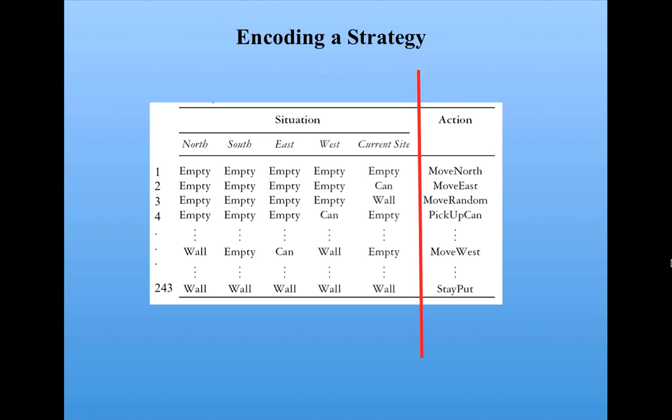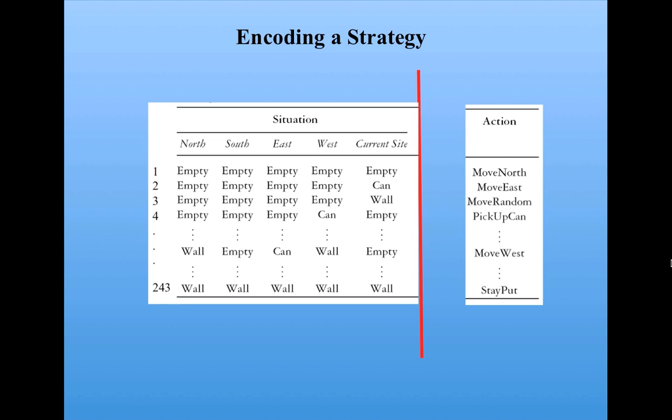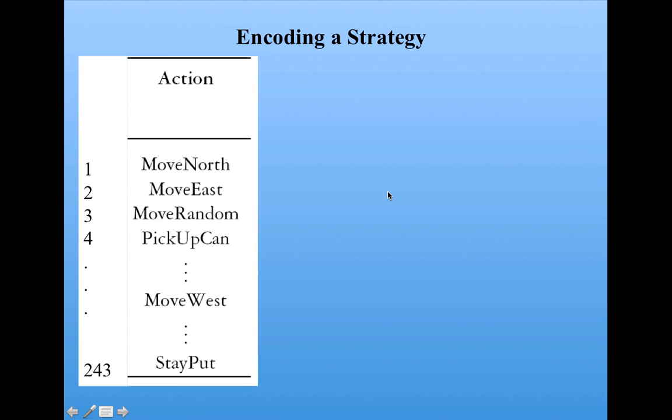What we can do now is just take the list of actions and remember the order of the possible 243 situations. So now we can cut off this list of actions and remember that the first action corresponds to the first situation, which is everything empty. The second action corresponds to the second situation, which is everything empty except for a can in the current site, and so on. So now we can take just that list of actions and we can encode it according to a numerical code. So what I'm going to do is give each action a number, its code number, 0 through 6.